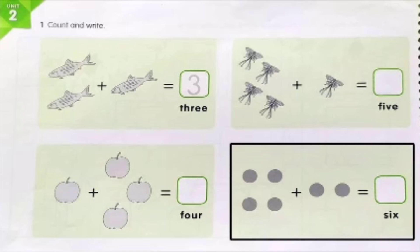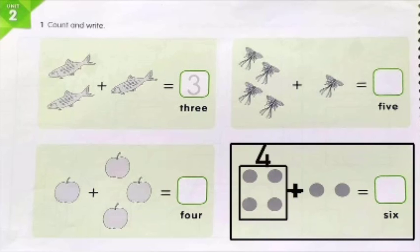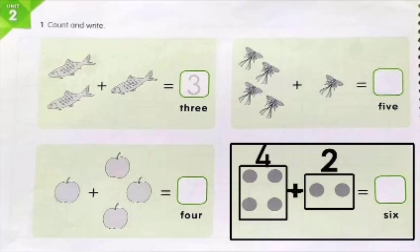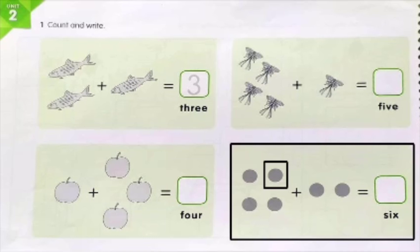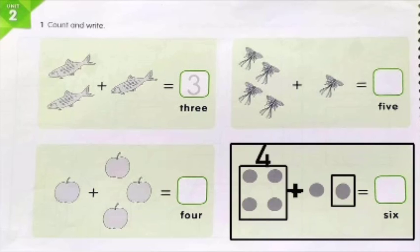In the last picture you can see dots. Let's count how many dots are in the first part: one, two, three, four. And see how many more to add: one, two. You have to add four dots and two dots. Let's count how many dots we get: one, two, three, four, five, six. Yes, there are six dots. Write number six in the given box.